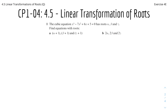These questions are from Exercise 4E from the Core Pure 1 textbook, so you can check it out. Here's question 1: the cubic equation x cubed minus 7x squared plus 6x plus 5 equals 0 has roots alpha, beta, and gamma. Find the equations with roots: (1) alpha plus 1, beta plus 1, gamma plus 1, and (2) 2 alpha, 2 beta, and 2 gamma. I'll split into two different sections so that it's easy to answer them.